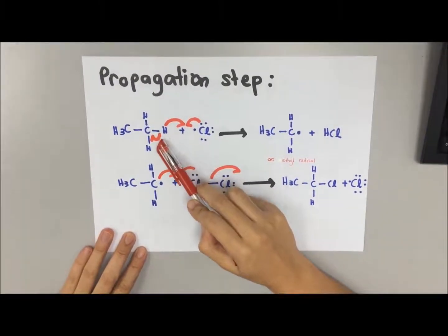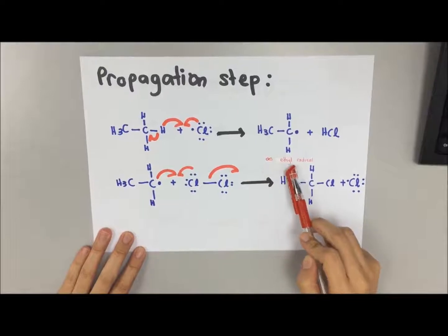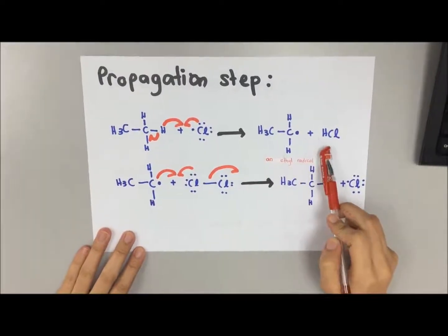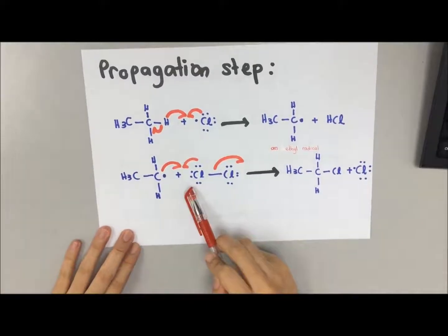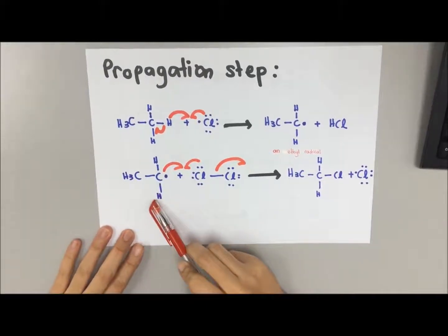Cl, which is your free radical, will extract one of the hydrogens from your ethane, forming an ethyl radical and the product HCl will be formed.